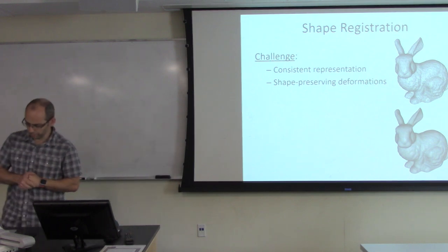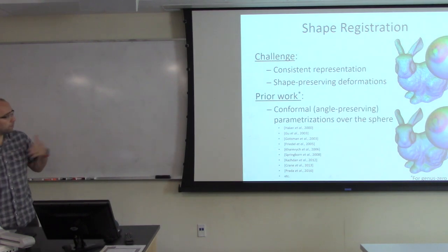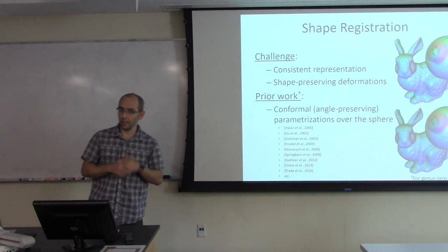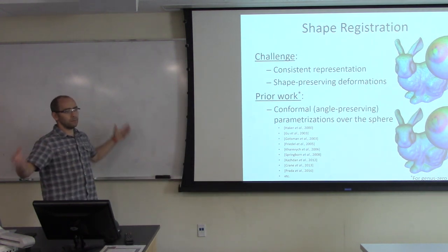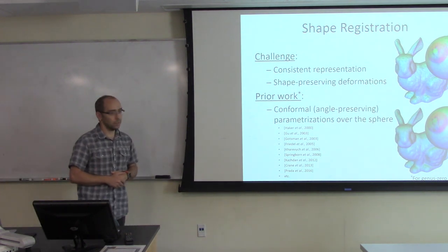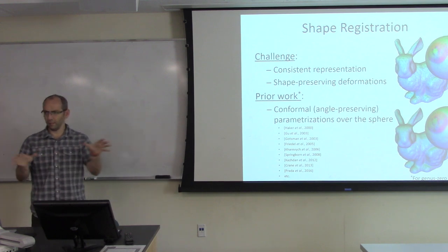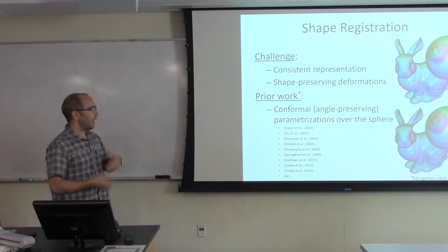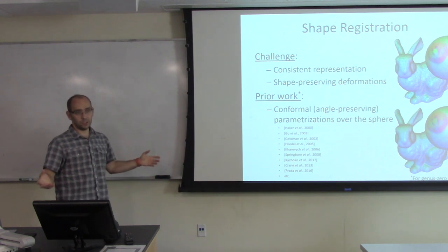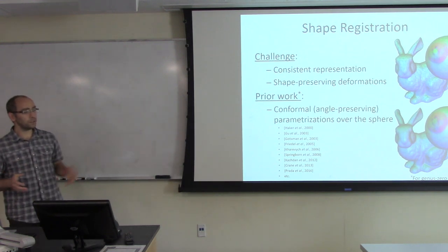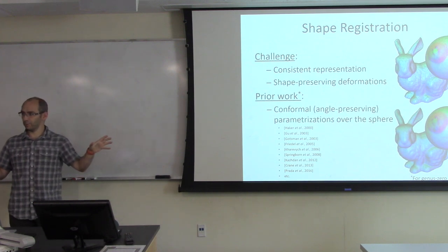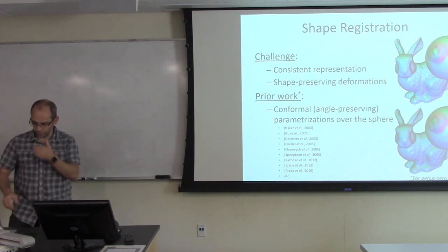The proposed approach is to get a representation of your shape over some canonical base domain. One thing that has been very popular — even in the deep learning community — is to look at conformal parameterizations: mappings of your surface to the sphere, bijections from the sphere to the surface that preserve angles.